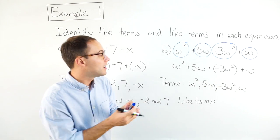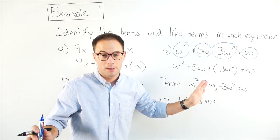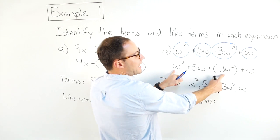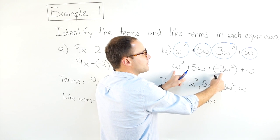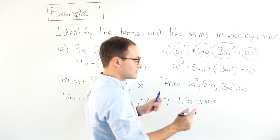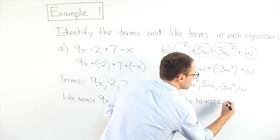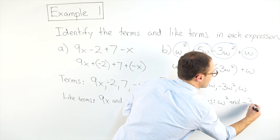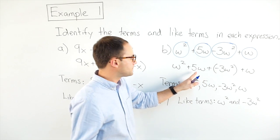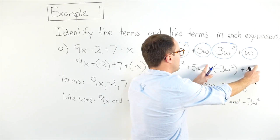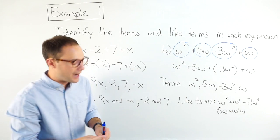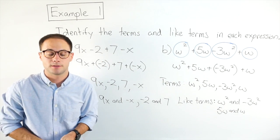Now let's identify the like terms. They're all w, but we also have to check that they have the same exponents. I've got w squared and negative three w squared — the coefficient doesn't matter, these are still like terms because they're both w squared. And then five w and w — again, the coefficient is fine, we're just looking at the same variable raised to the first power. So five w and w are my other like terms.